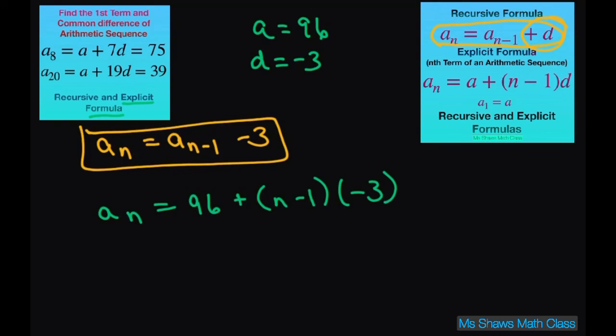So you write plus N minus 1 times negative 3. All right, using this formula. We're just letting our first term equal A. So A sub N equals 96. And then distribute and you get negative 3N plus 3. So this is going to give you your Nth term or your explicit formula, both the same thing, equals 99, just adding those two, minus 3N.